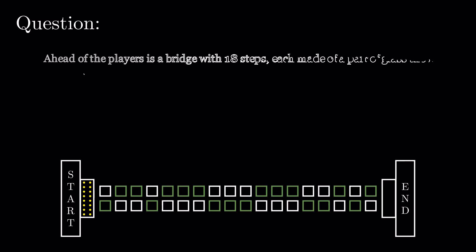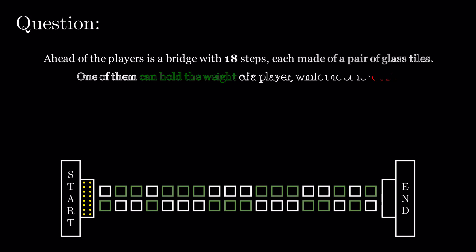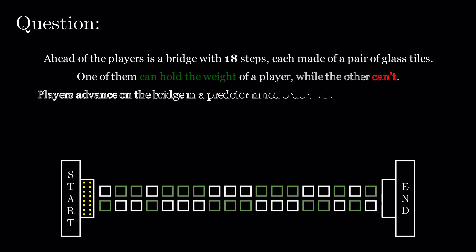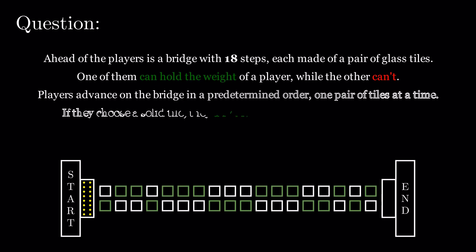Ahead of the players is a bridge with 18 steps, each made of a pair of glass tiles. One of them can hold the weight of a player, while the other can't. Players advance on the bridge in a predetermined order, one pair of tiles at a time.